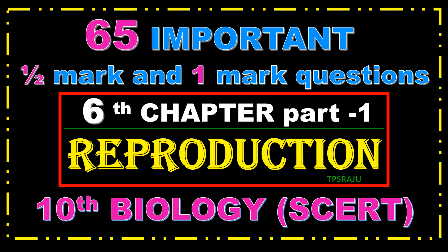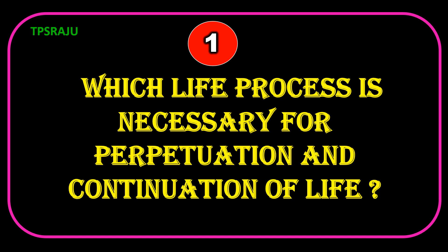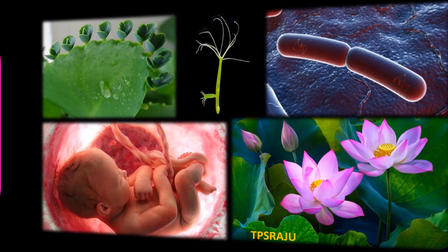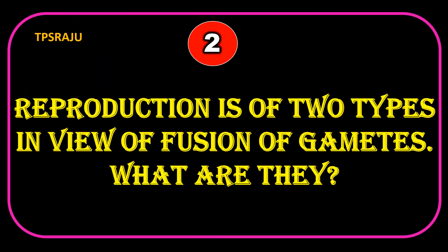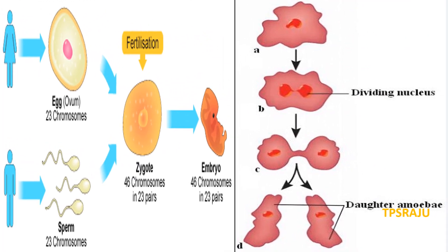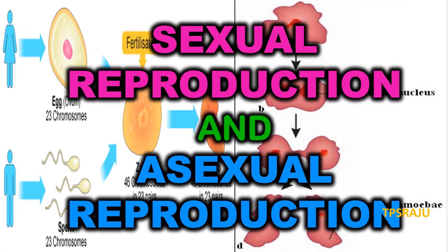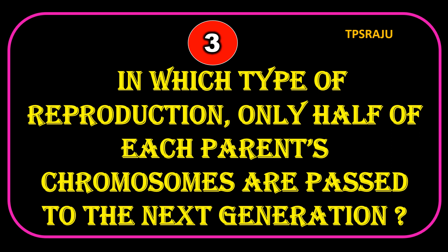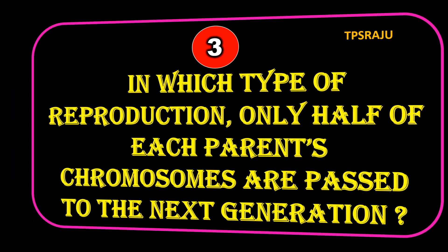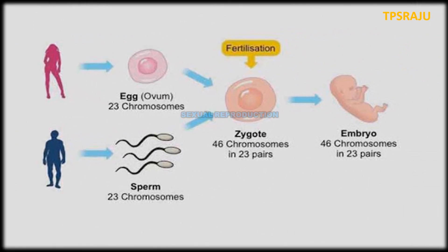Which life process is necessary for perpetuation and continuation of life? Reproduction. Reproduction is of two types in view of fusion of gametes. What are they? Sexual reproduction and asexual reproduction. In which type of reproduction are only half of each parent's chromosomes passed to the next generation? Sexual reproduction.